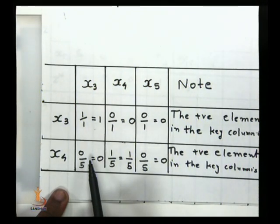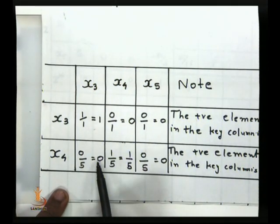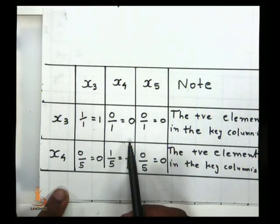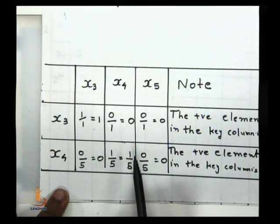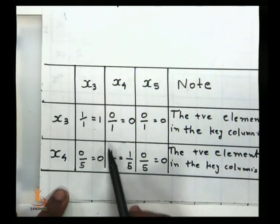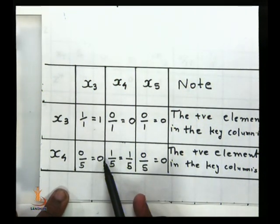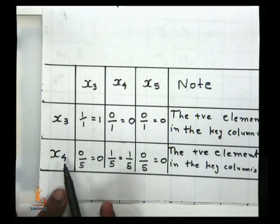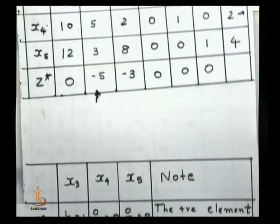For both x3 and x4, comparing the ratios: x4 has ratio 1 and 0, while x3 has 0 and 1/5. To find the smallest algebraic ratio, between 0 and 1, 0 is smaller. Therefore, the corresponding variable x4 will leave the basis.